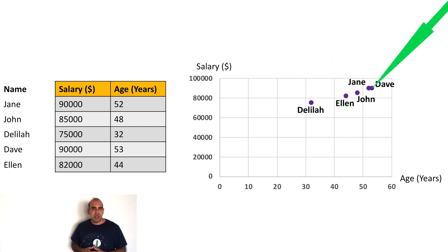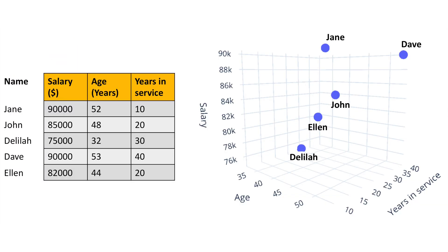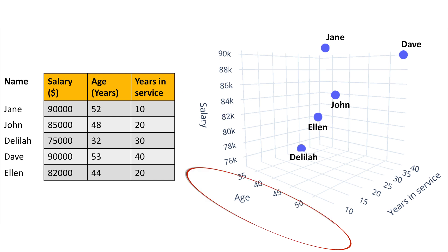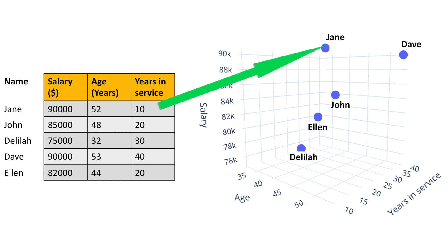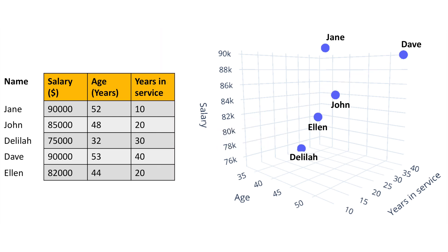Dave is one year older than Jane, which is why the marker for Dave is slightly to the right of Jane's marker, indicating that Dave is slightly older. With three features — salary, age, and years of service — the data becomes three-dimensional. As a result, our data space will become three-dimensional, containing three axes, and we can place our data points in a three-dimensional space like this one.